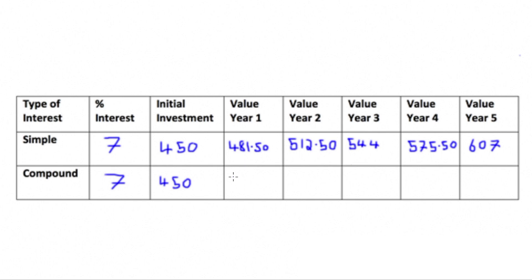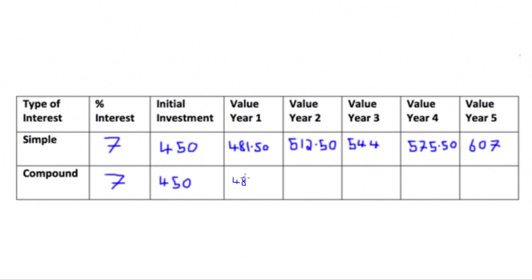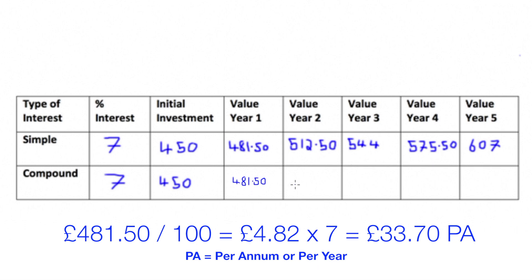When we come to the compound interest bank account, we need to recalculate each year based on the total amount invested as well as any interest that's accumulated in the previous years. For our first year, taking our £450 original investment, dividing that by 100 and times it by 7 gives us the same answer of £481.50 as year one in the simple interest account. However in year two, we take the entire £481.50, divide by 100 to get £4.82, and times it by 7 to get £33.70, which we add to year one's total to get the final value of year two.